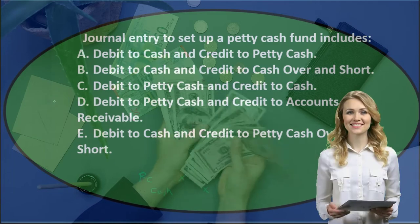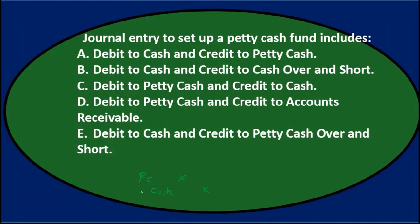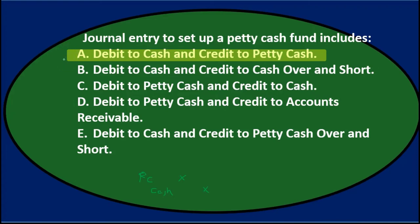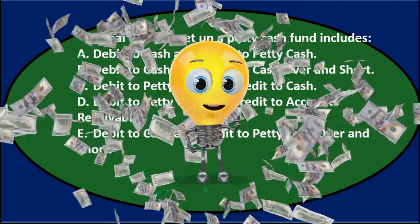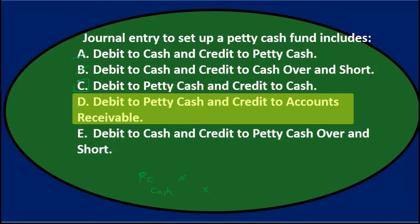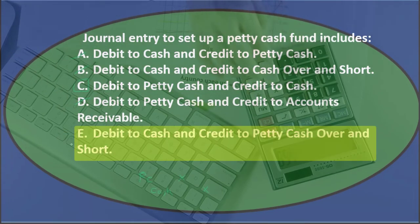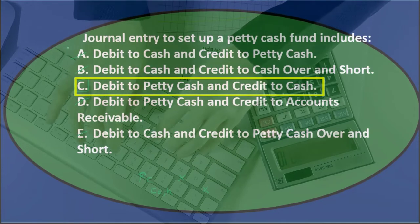Cash is a debit balance account and it's going to go down with a credit; petty cash is a debit balance account and it's going to go up with a debit. Looking through the options: A has it backwards — debit cash, credit petty cash; B involves cash over and short, which we don't deal with yet at setup; C says debit to petty cash and credit to cash — that's the one; D involves accounts receivable, which is not relevant here; E also involves over and short. So C is the answer.